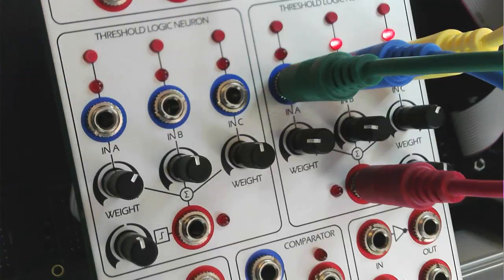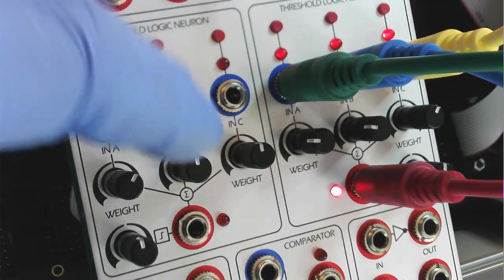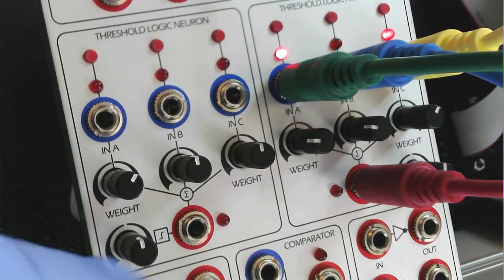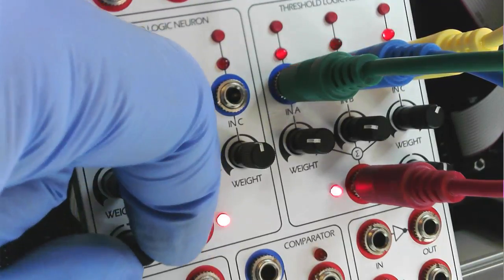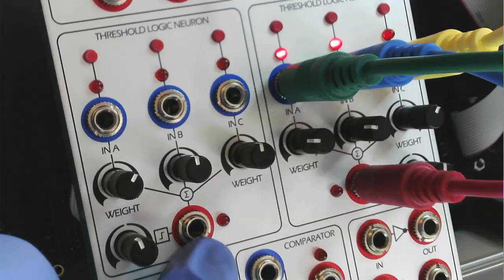Each neuron has three input channels, each with a separate weight control. The channels are then summed with a Threshold Activation value set by this potentiometer. The output available here is a transfer function based on the interaction of the weighted inputs and thresholds.